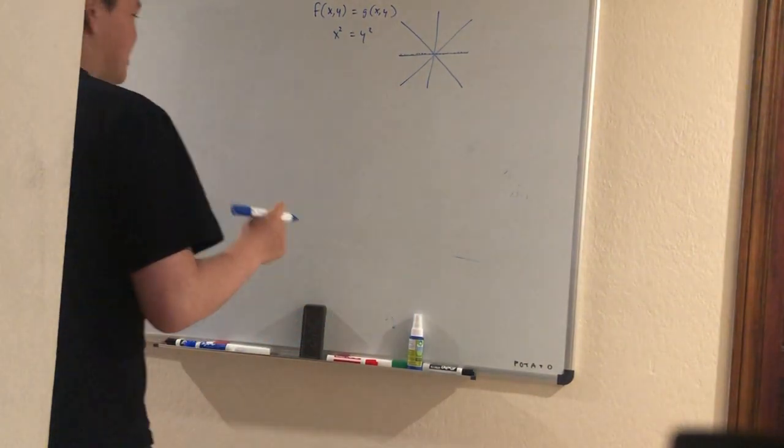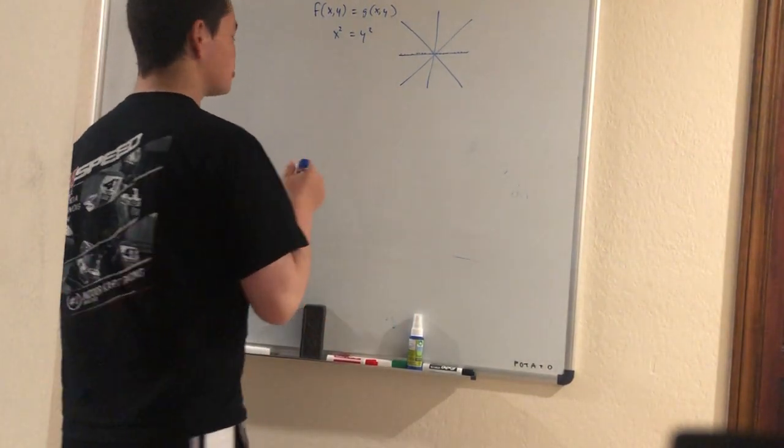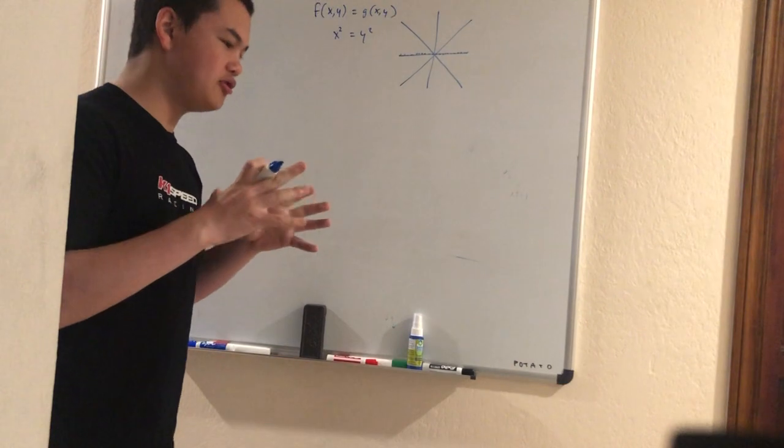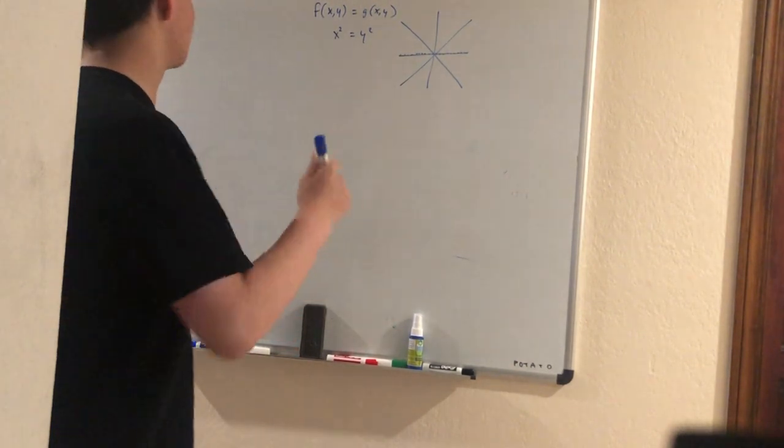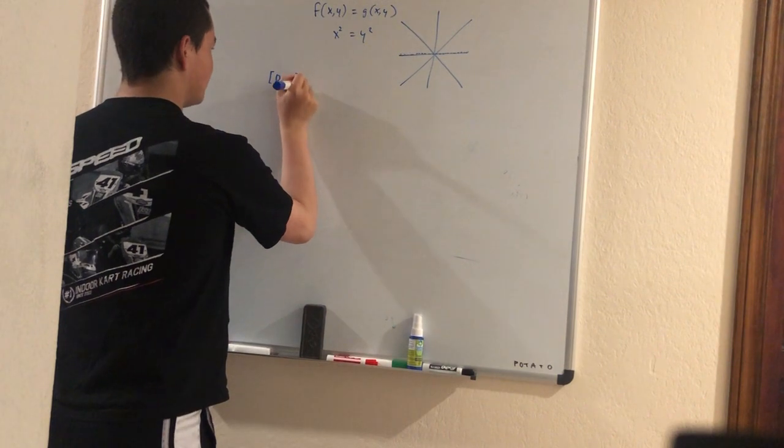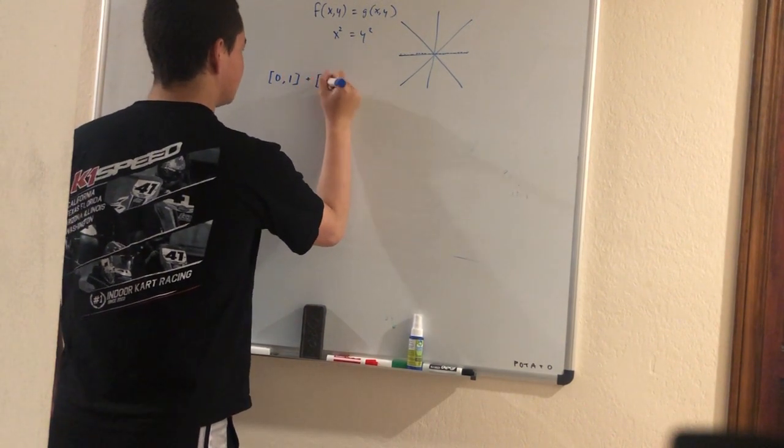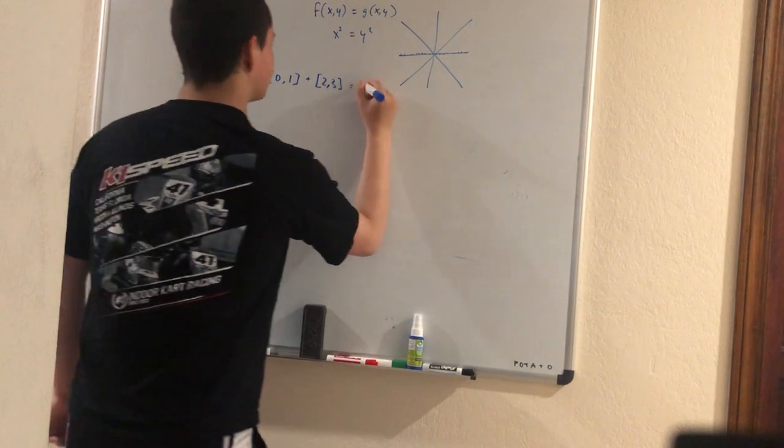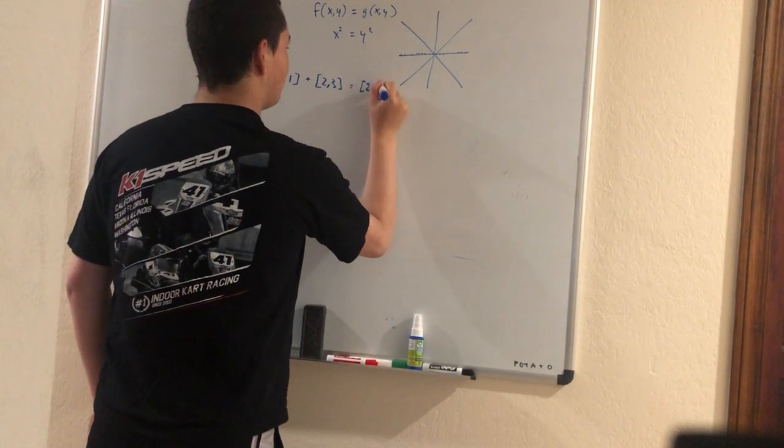This is quite cool. So what interval arithmetic is, is it allows you to do operations on intervals. As an example, the interval [0, 1] plus the interval [2, 3] is the interval [2, 4].